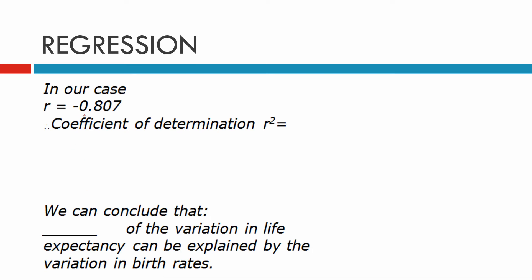In our case, we had r equals negative 0.807. So our coefficient of determination, remember we square the r, and when we square that, we end up getting 0.651 as a decimal, then we'll convert it to a percentage, 65.1%. So we can write, we can conclude that 65.1% of the variation in life expectancy can be explained by the variation in birth rates.